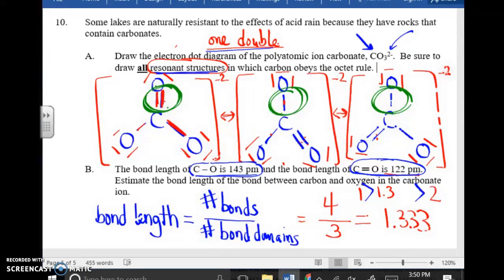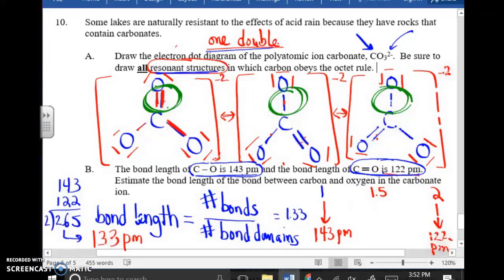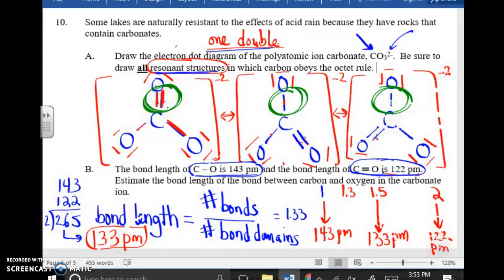Estimate the bond length of the bond between the carbon and oxygen in the carbonate ion. So let's put it this way. Let's say that the math had worked out and we had gotten a 1 and a half bond. Well, a 1 and a half bond is equally between the length of a single bond and a double bond. So in that case, I could just take the average of 143 and 122, which is 133 picometers. But notice, it's not a 1 and a half bond. It's a 1.33 bond, which is actually equally between 143 and 133. So I guess that would put somewhere in the area, the average would be about 138 picometers.